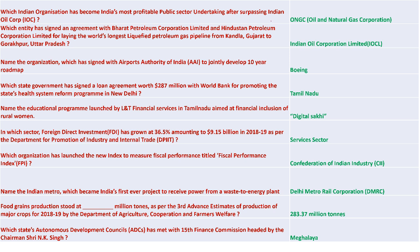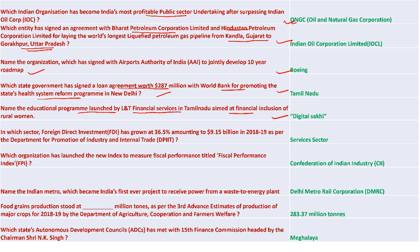ONGC became India's most profitable PSU after surpassing Indian Oil Corporation. Indian Oil Corporation signed an agreement with BPCL and Hindustan Petroleum Corporation for laying the world's longest liquefied petroleum gas pipeline from Kandla, Gujarat to Gorakhpur, Uttar Pradesh. Boeing signed with the Airport Authority of India to jointly develop a 10-year roadmap. Tamil Nadu signed a loan agreement of 287 million dollars with the World Bank for promoting the state health system. Datal Sakhi is the educational program launched by L&T Financial Services in Tamil Nadu for financial inclusion of rural women.